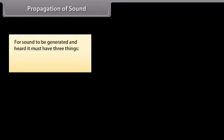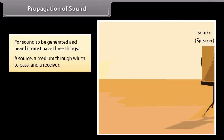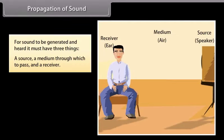Propagation of sound. For sound to be generated and heard, it must have three things. They are: a source, a medium through which to pass, and a receiver. Let us assume the source is the speaker's voice, the medium through which it is transmitted is air, and the receiver is the listener's ear.